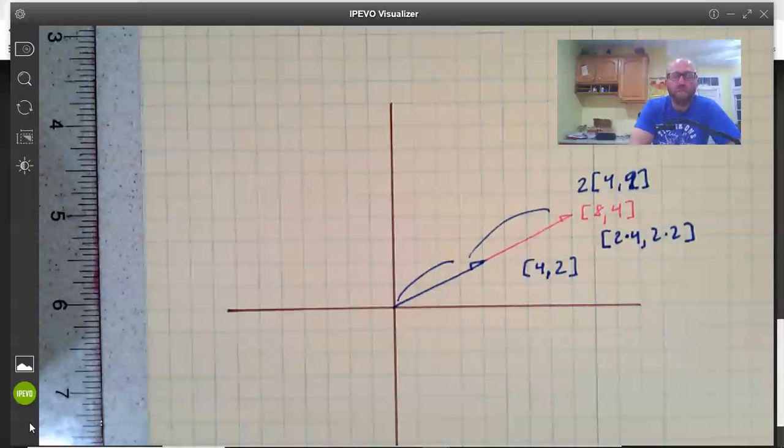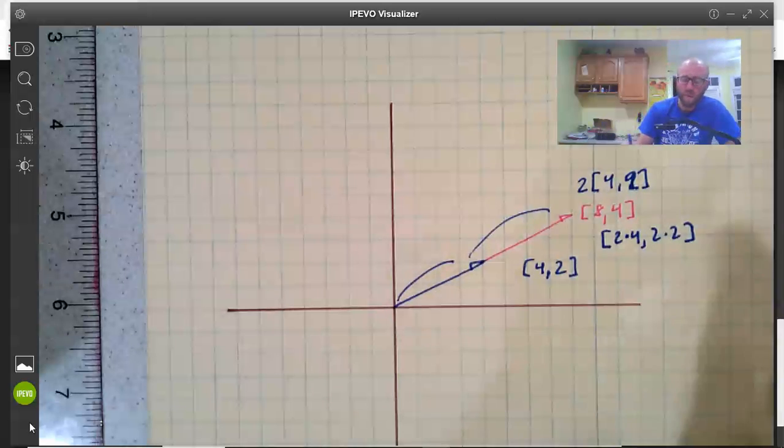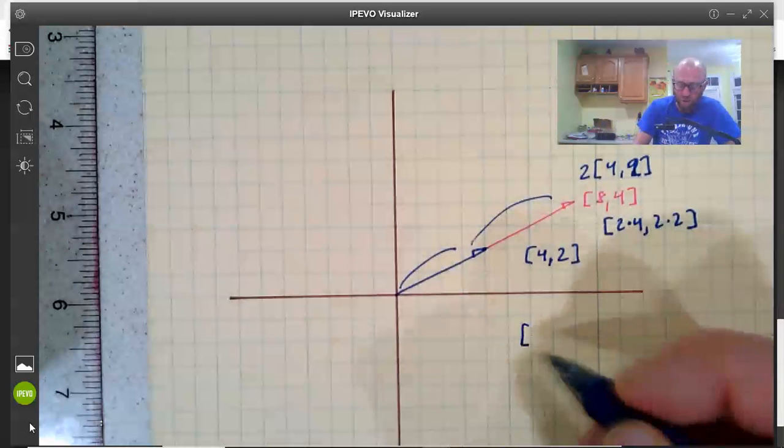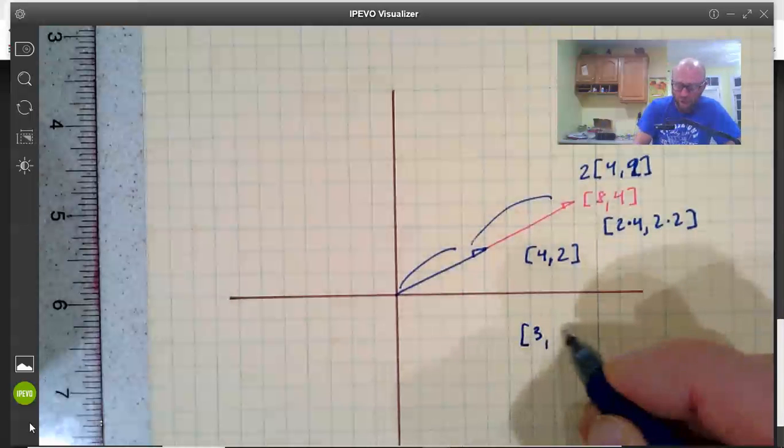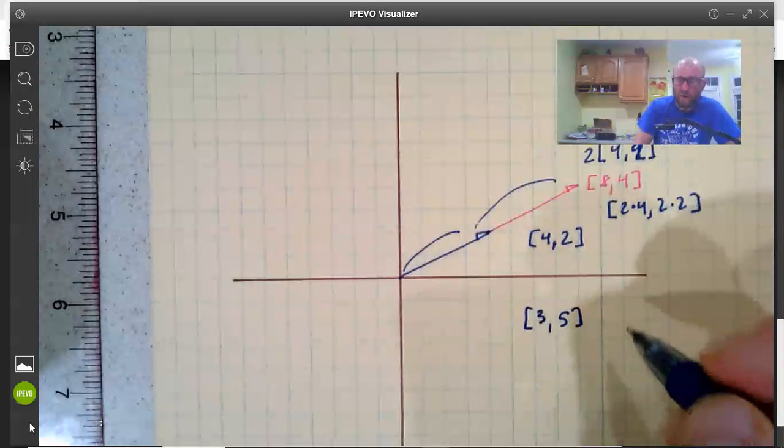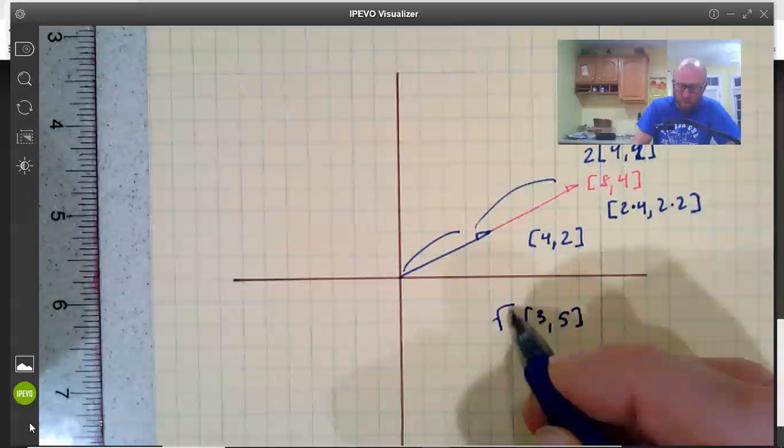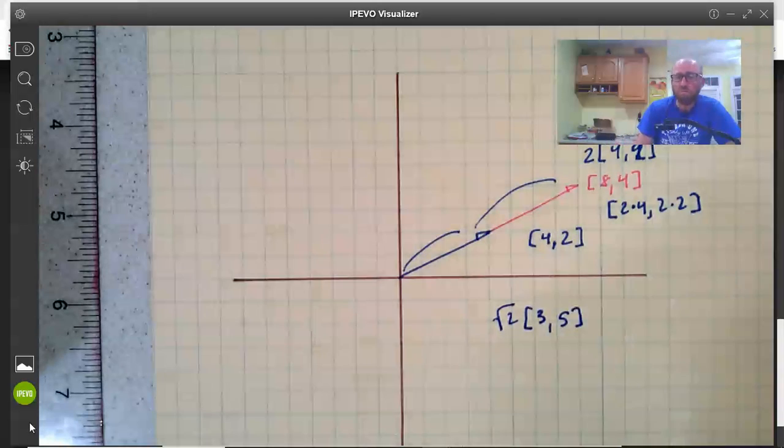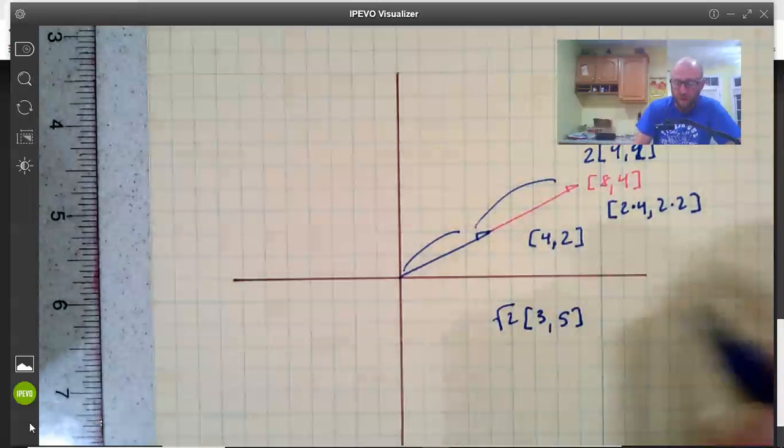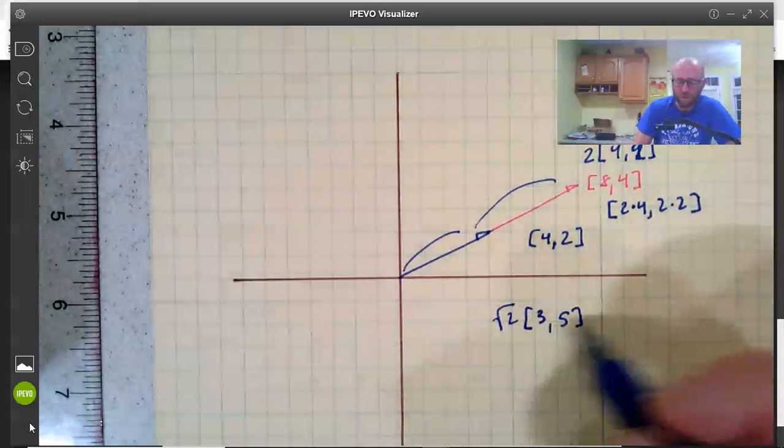And the same would apply with any sort of scalar. I could multiply it by negative 3 or pi or square root of 2 or whatever. So say for example if I wanted to do, I'm going to go (3,5). All right I want to multiply that by the scalar square root of 2. Well I could leave it like this. I could say well this is a single vector here.